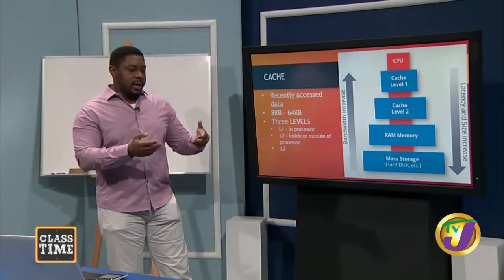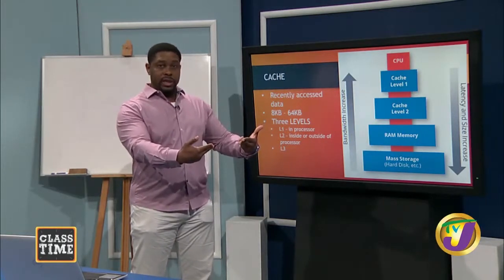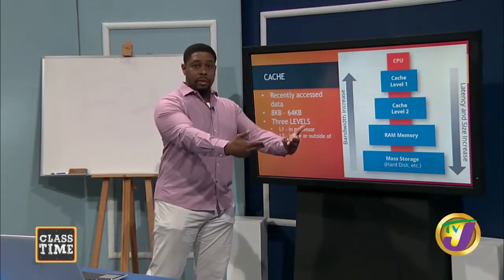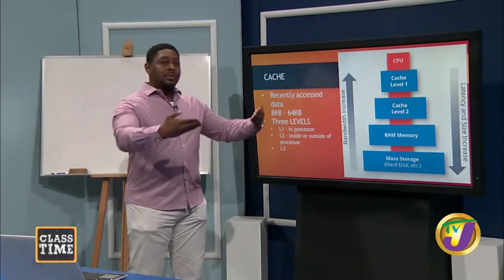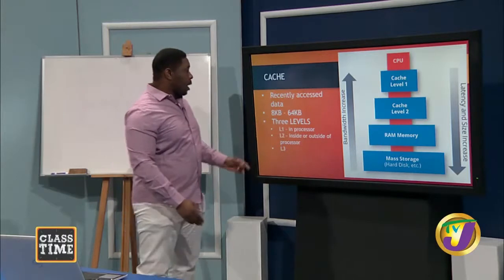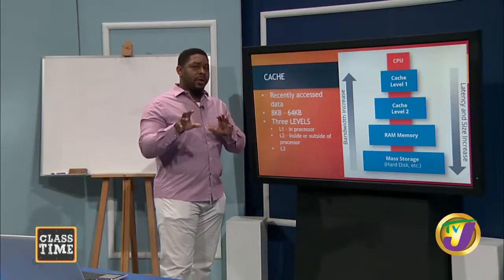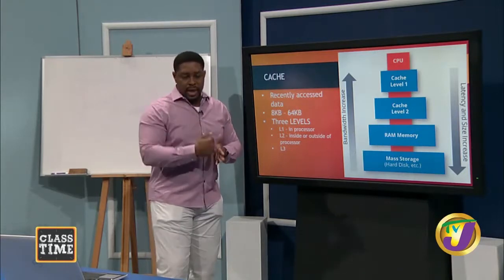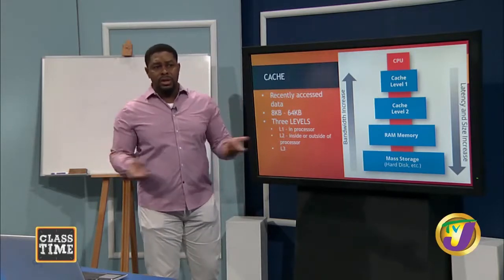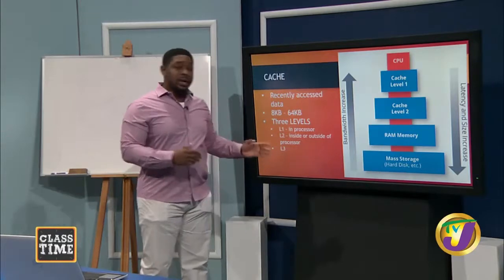When level three gets information, there may be other data used even more frequently that moves to level two, and then to level one — a succession happens with your cache. Each level tends to be smaller in capacity than the one below it, so level three is larger than level two, which is larger than level one. The number of cache levels tends to indicate the type of computer — gamers, engineers, or video editors typically have computers with up to level three cache.